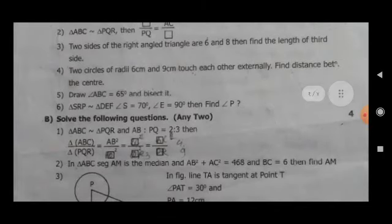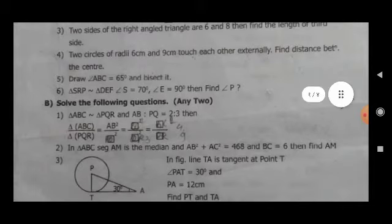Fourth, two circles of radius 6 cm and 9 cm touch each other externally. Find the distance between the centers. Fifth, draw angle ABC 65 degrees and bisect it.